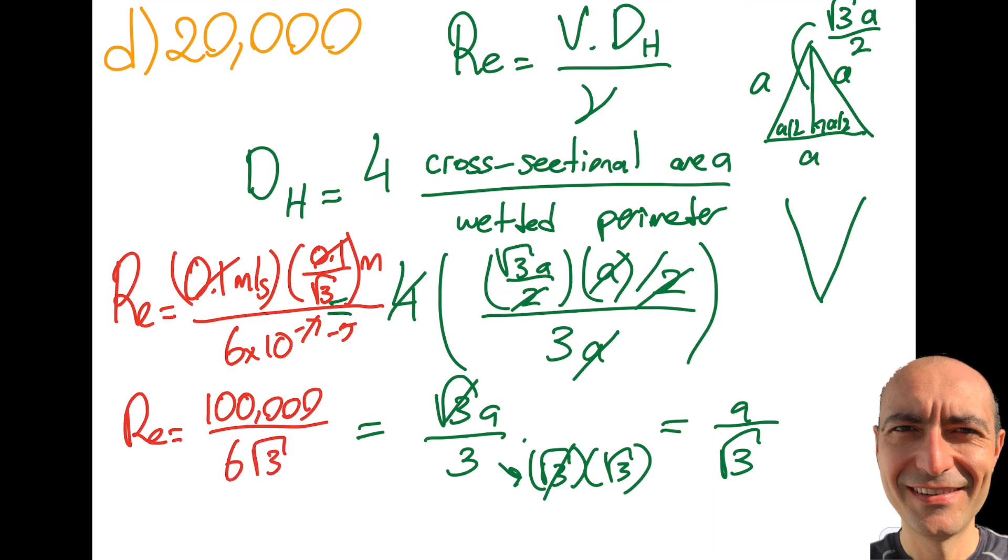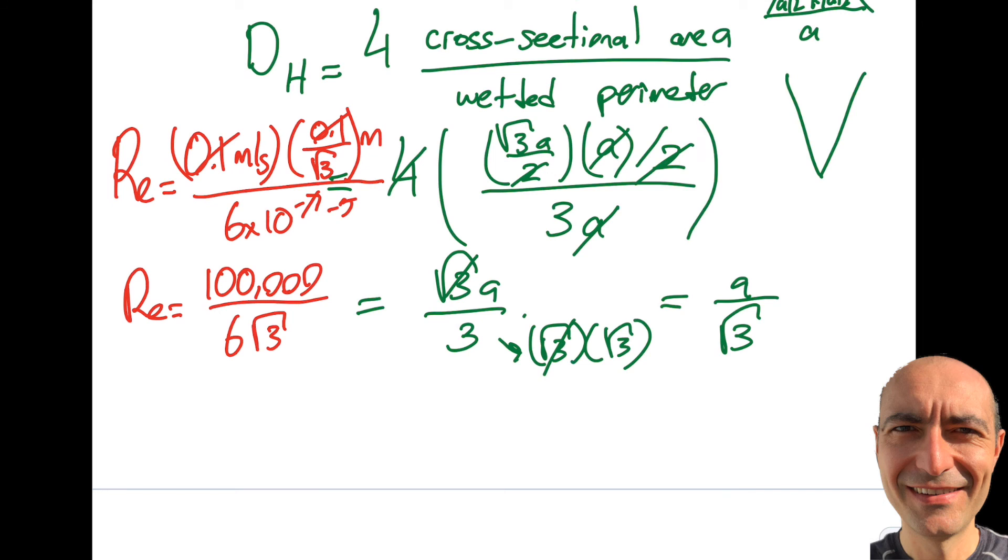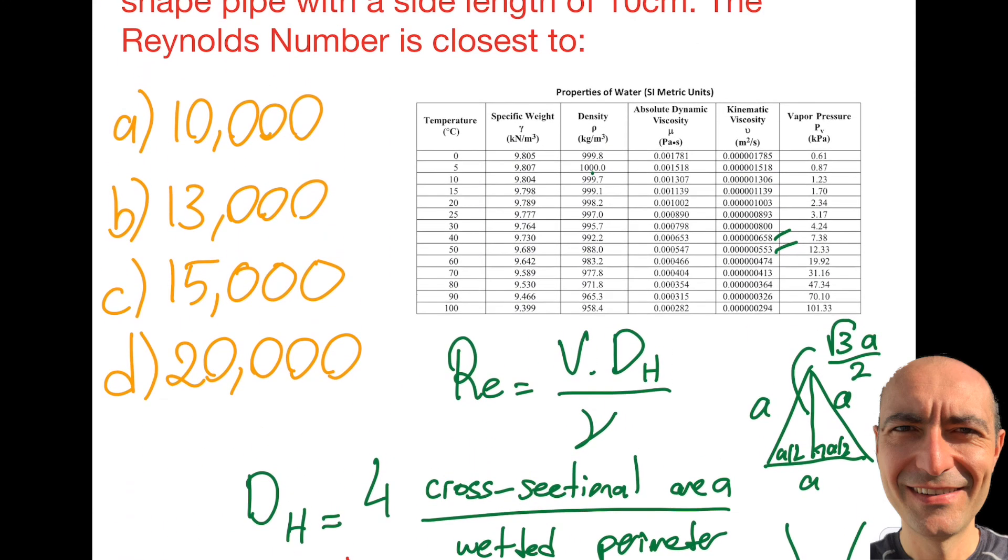Now I have to plug this into my calculator. If I do that, I will get myself 9,622 approximately as my Reynolds number. What is the unit? No unit. If I go up there, you can see that option A will be the closest one that I have. Thank you for watching this video.